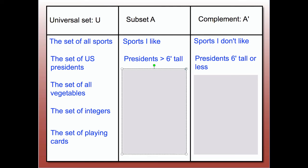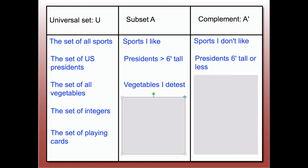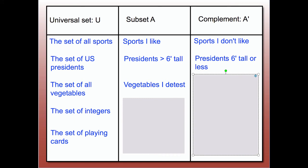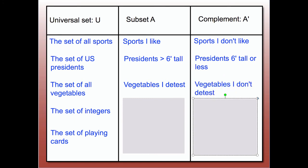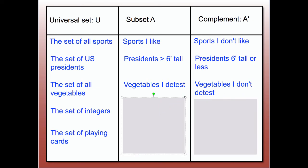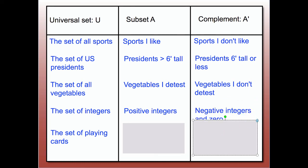If the universe U is the set of all vegetables and the subset A is the set of vegetables I detest, then A-prime is going to be the set of vegetables I don't detest. If the universe U is the set of integers and the subset A is the set of positive integers, then the complement of A will be the set of negative integers and zero — we have to remember to include zero because zero is an integer, but it's not positive.